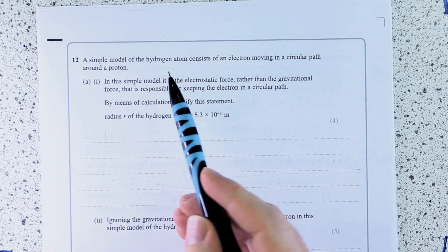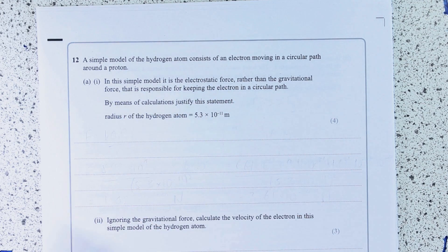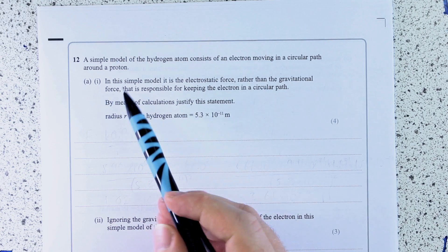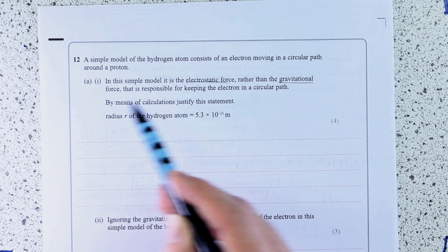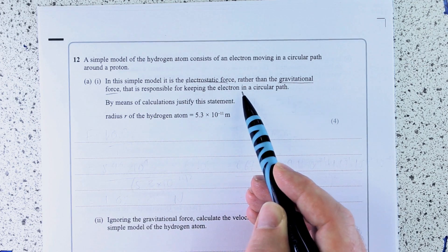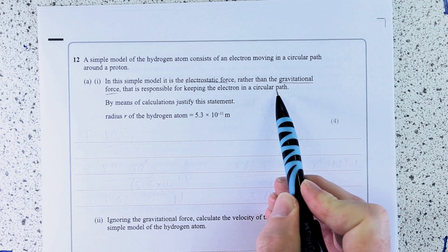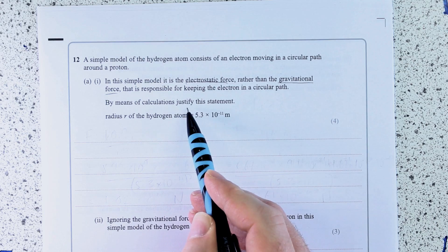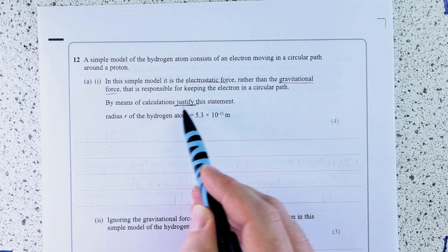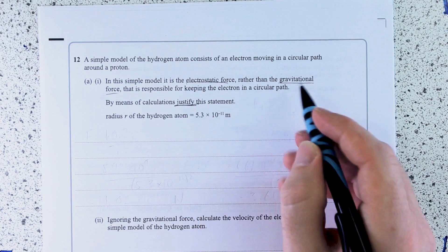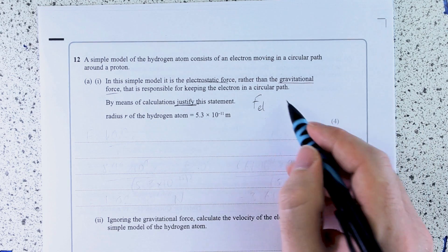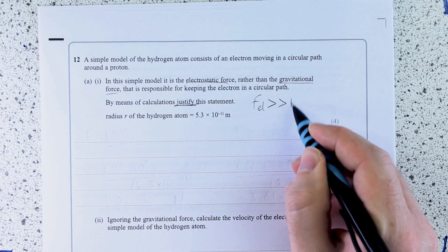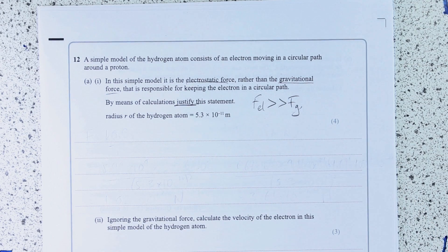A simple model of the hydrogen atom consists of an electron moving in a circular path around a proton. In this model, it's the electrostatic force rather than the gravitational force that's responsible for keeping the electron in a circular path. By means of calculations, justify this statement. So essentially what we're trying to do is show that the electrostatic force is much, much greater than the gravitational force.